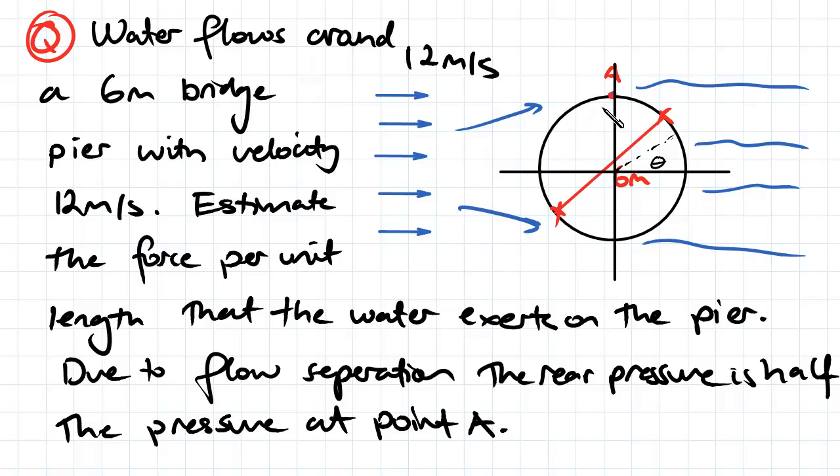So we're going to have to work out the pressure on this front here and that's going to be between an angle of π/2 and π. And then we're going to need to work out the pressure at this point A and that's going to then give us the pressure on the rear half of our cylinder or our bridge pier.